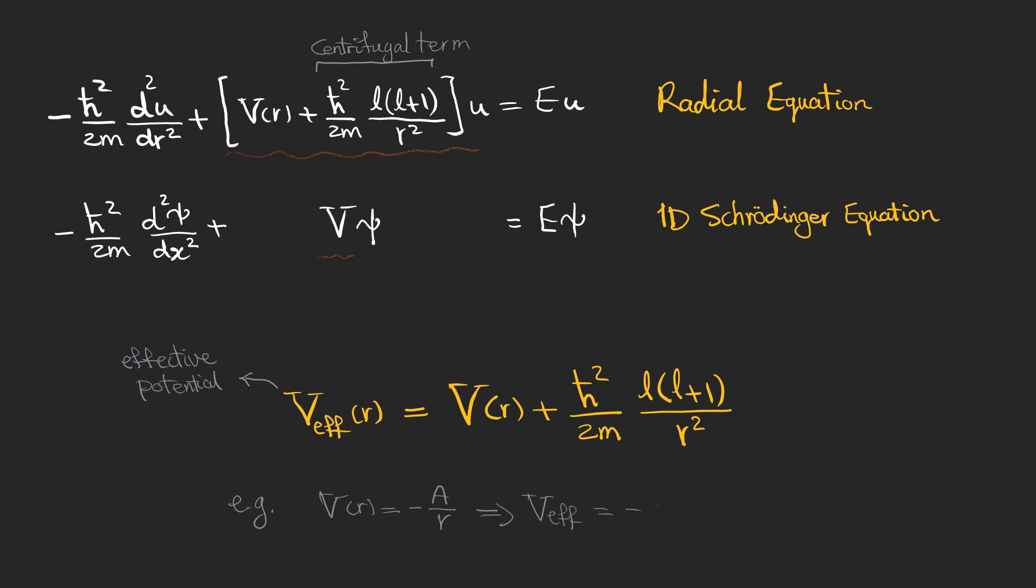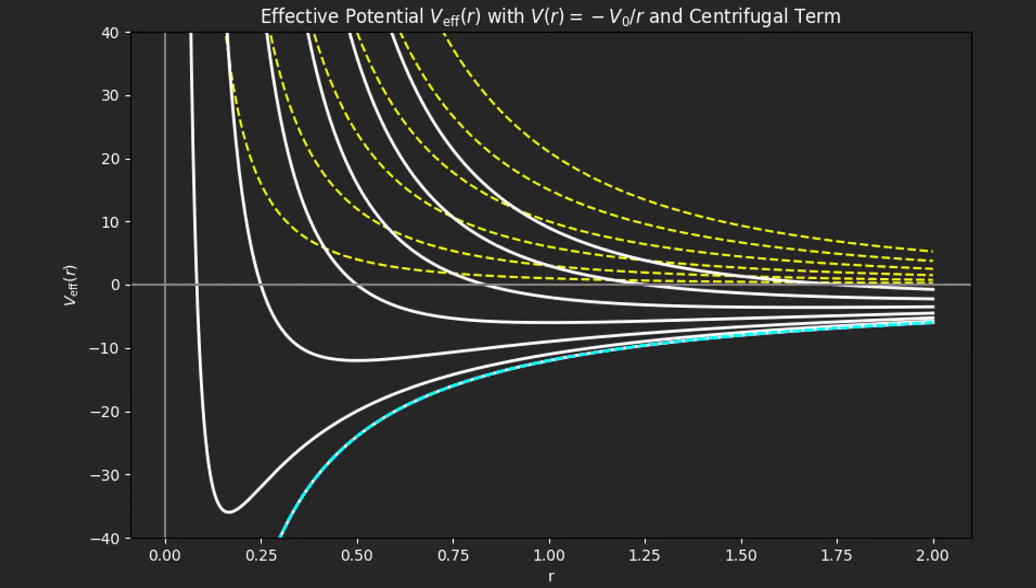Pay attention that if your particle is in a potential VR, you should add this centrifugal term and then solve the equation. For example, these are the diagrams of the effective potential for an attractive potential. When L is 0, the effective potential is equal to attractive potential. These are centrifugal terms for L1 to L6 and these white diagrams are effective potentials for L1 to L6.